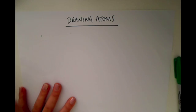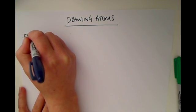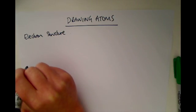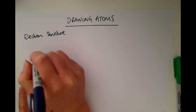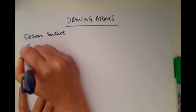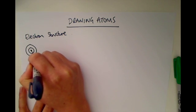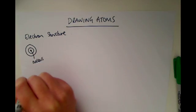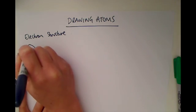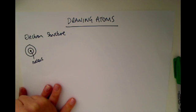When drawing atoms we only need to really think about the electrons because we will be drawing the electron structure of the atom. The electrons exist in energy levels or electron shells around the nucleus of the atom. So if this was the nucleus where all the protons and neutrons sit, the electrons wouldn't be in here but they'd sit in these energy levels around the outside of the atom.